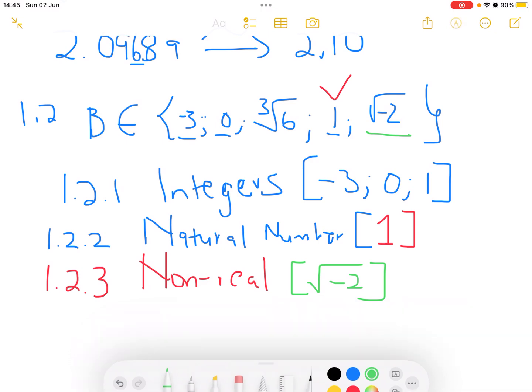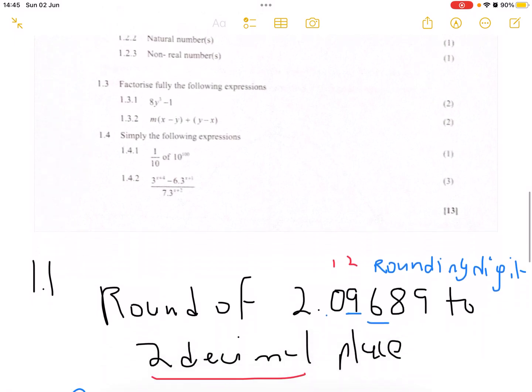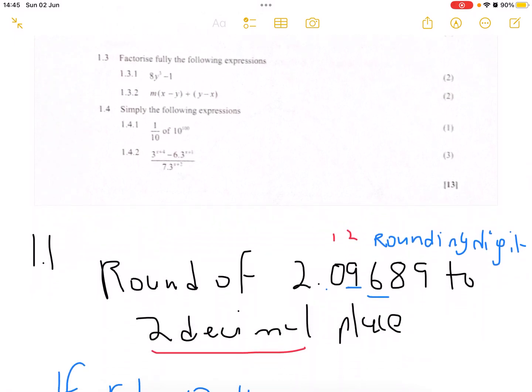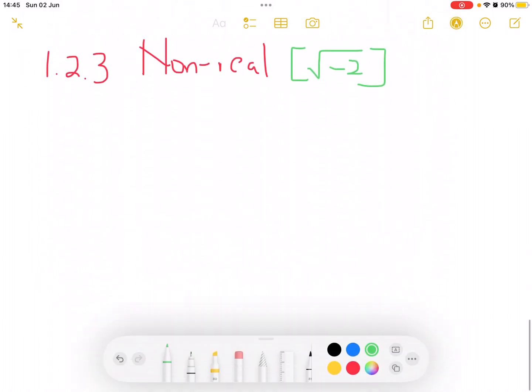We carry on into question 1.3, which says factorize fully the following expressions. 1.3.1, factorize 8y cubed minus 1. In grade 10, you're being introduced into more advanced factorizations. This factorization looks like the difference of two cubes. How is it a difference of two cubes? Because this is the same as 2y cubed minus 1 cubed.